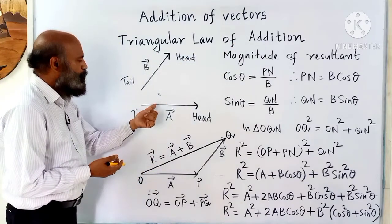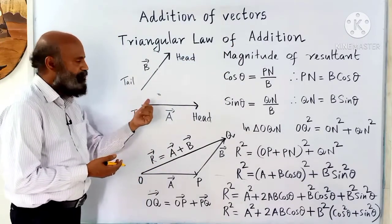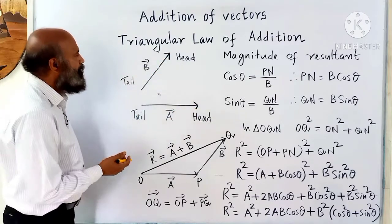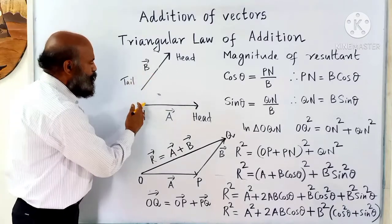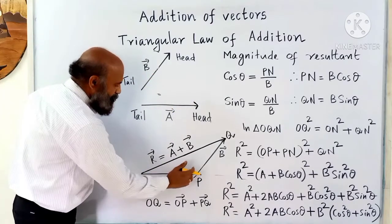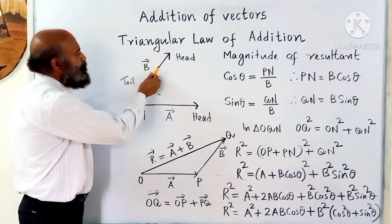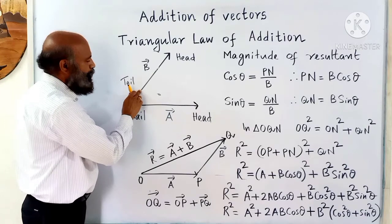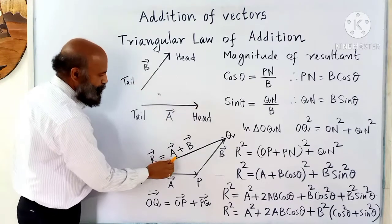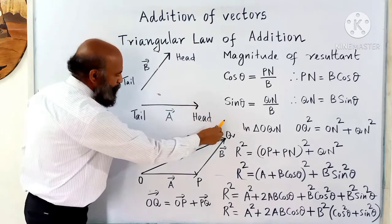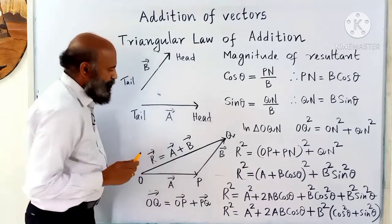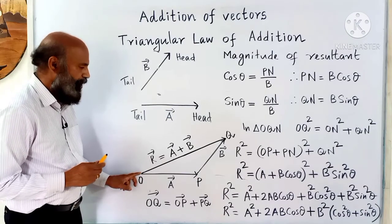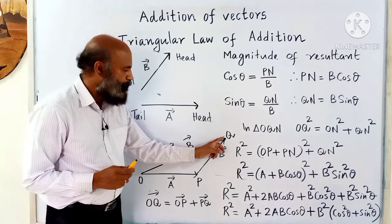Two vectors a and b are given. This is the tail of a and this is the head of a. Similarly, tail and head of b. To add these two vectors, draw a as it is, then without rotating, move b such that the tail of b touches the head of a.